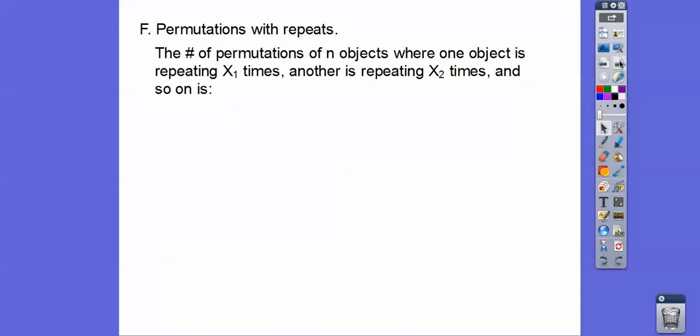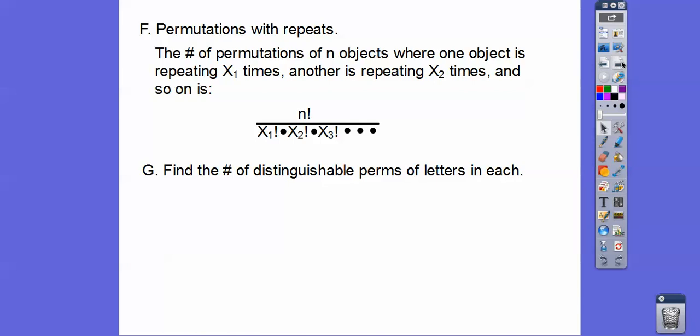So permutations that have repeats, okay? So the number of permutations or arrangements or orders of n objects, where one object is repeated x sub 1 times, and another object is repeated x sub 2 times, and x sub 3 times, and so on, is we do the n factorial over the ones that are repeating factorials. Now, if you don't have any repeaters, it's just n factorial. So find the number of distinguishable permutations of the letters in each, okay? So soccer, okay? So this one's going to be 1, 2, 3, 4, 5, 6 factorial, and since I have two c's repeating, I'm going to put 2 factorial downstairs, okay? So 6 factorial over 2 factorial comes out to be 360. There's 360 different ways to repeat them, okay?